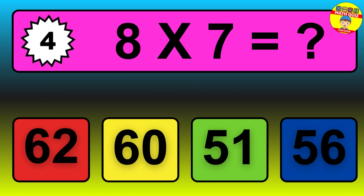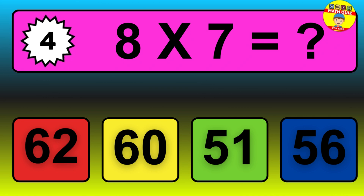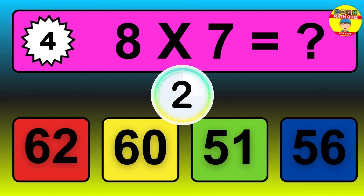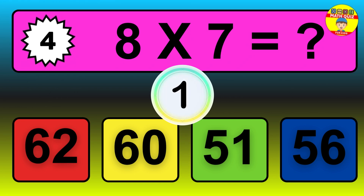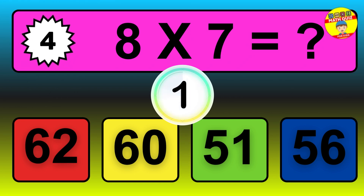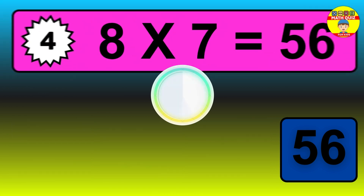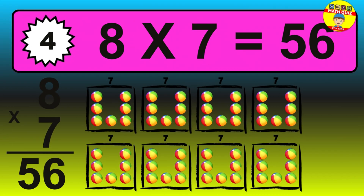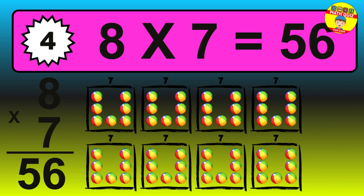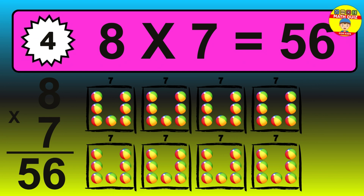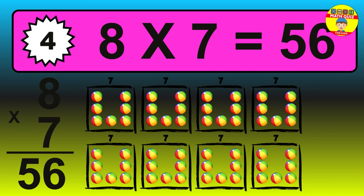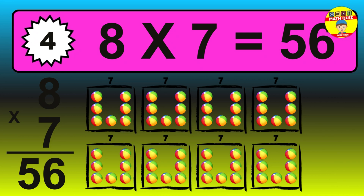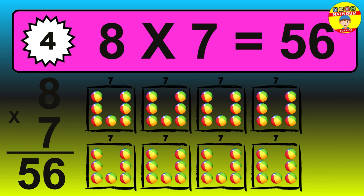Question 4. 8 times 7 equals what? The answer is 8 times 7 is 56. To calculate, we have 8 groups with 7 balls each one. So, how many balls do we have? 56 balls.